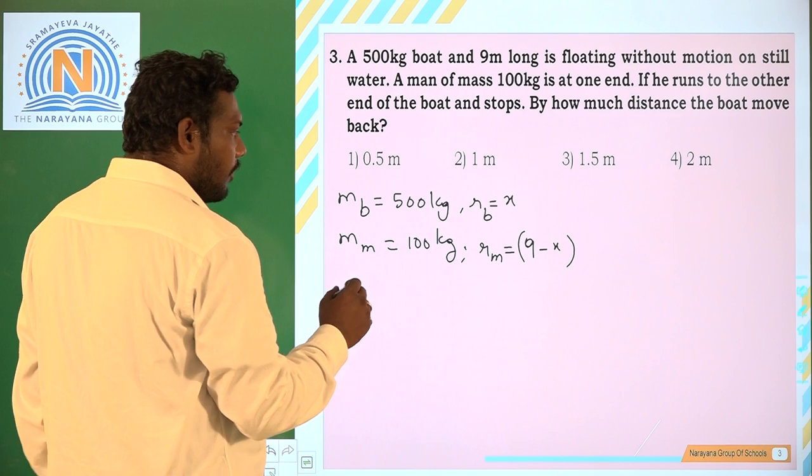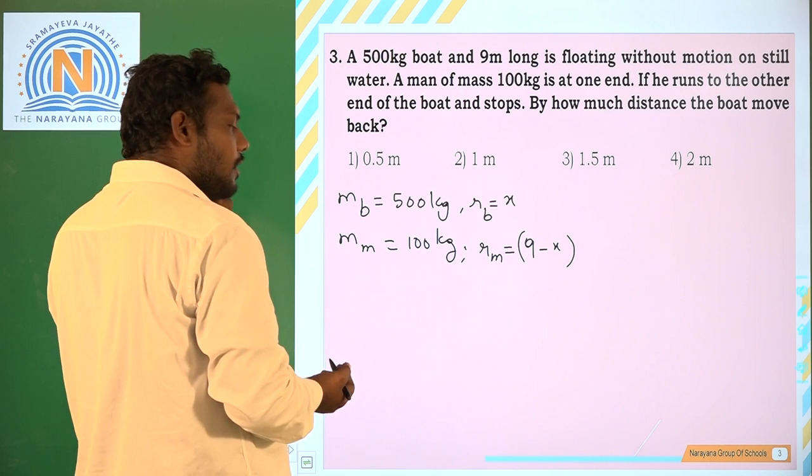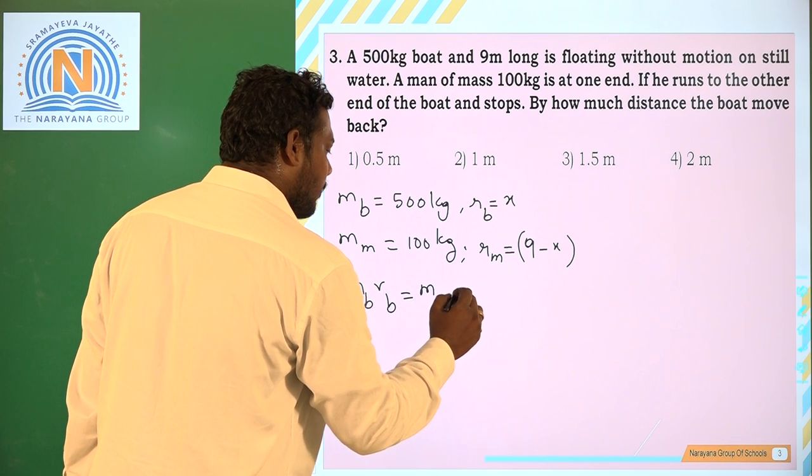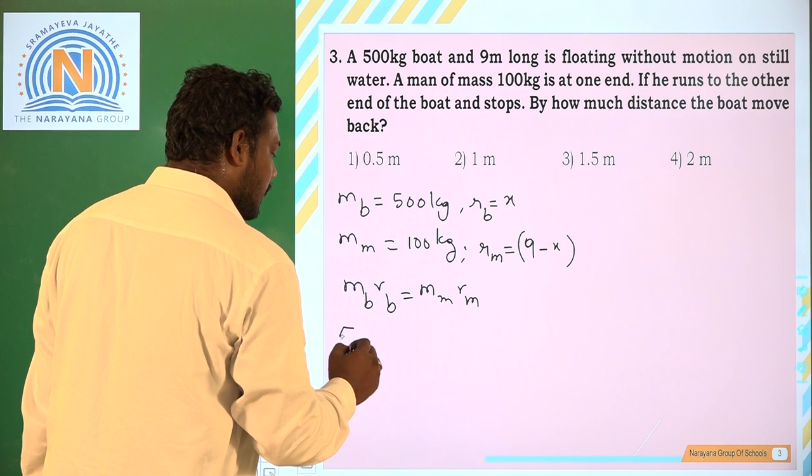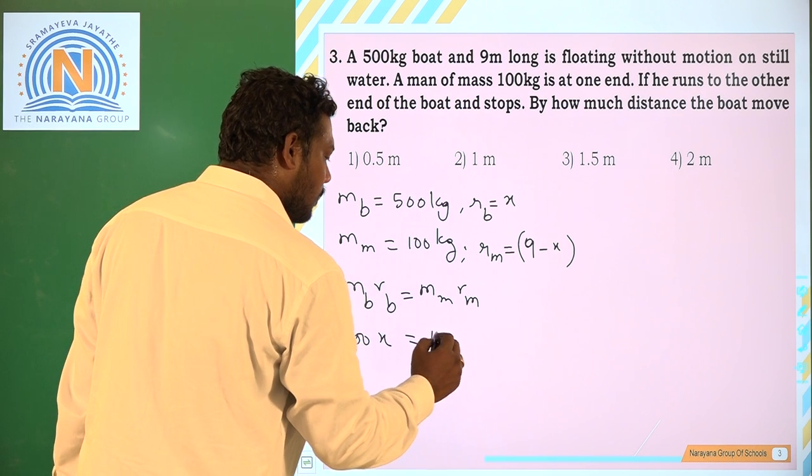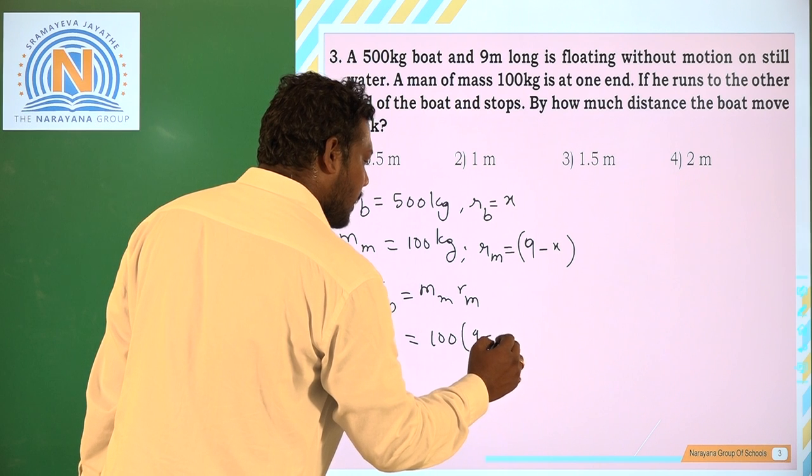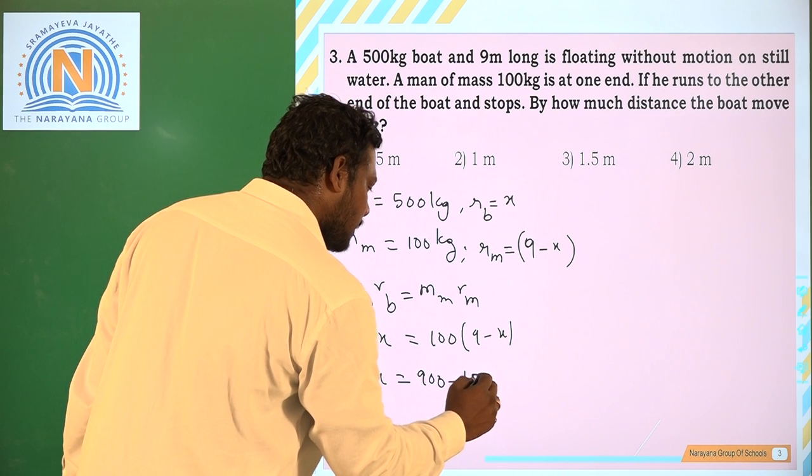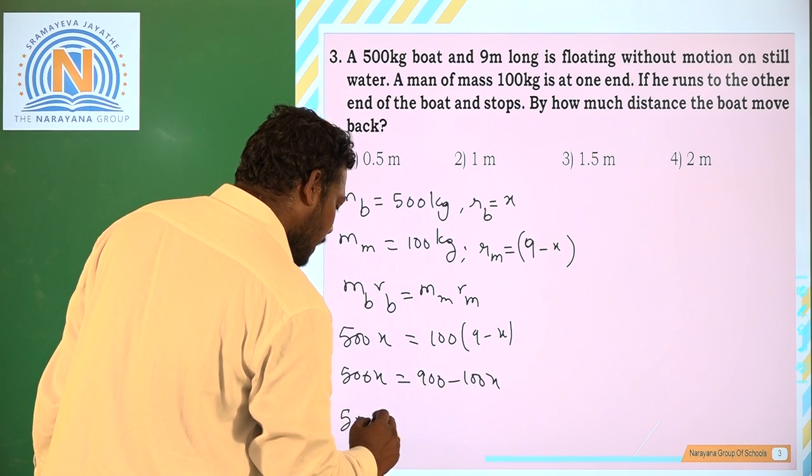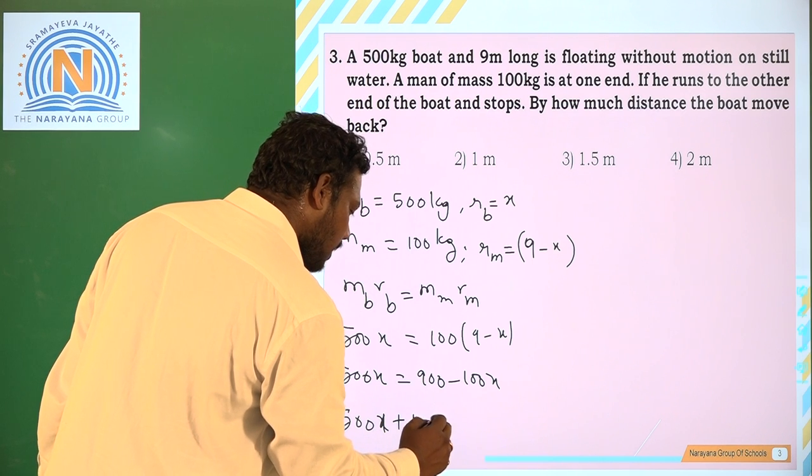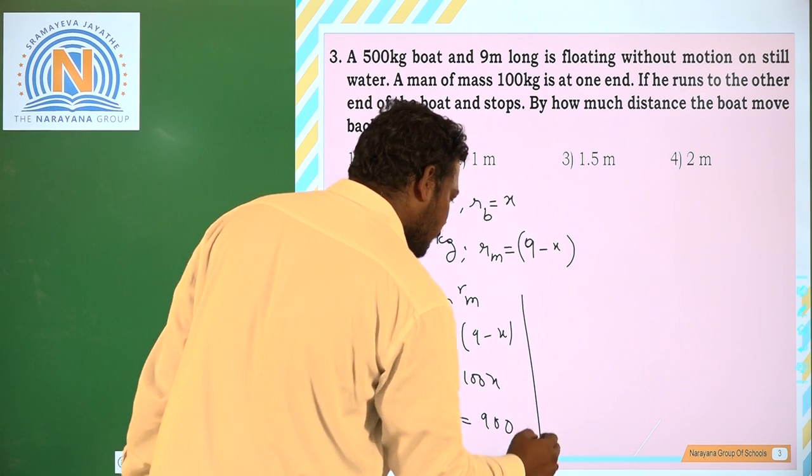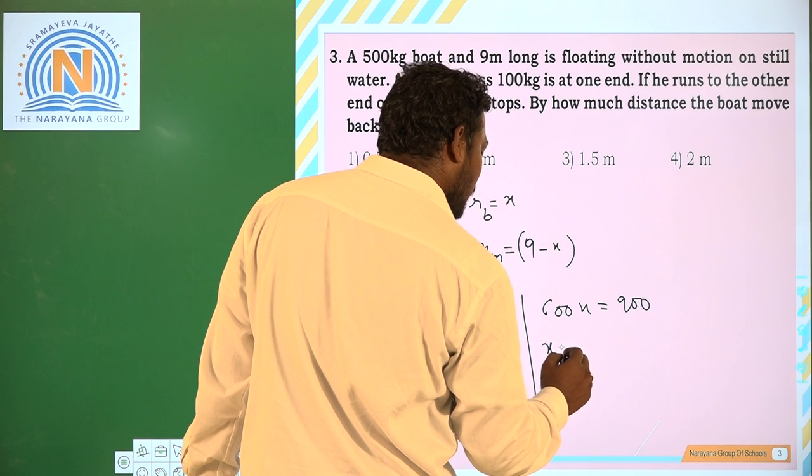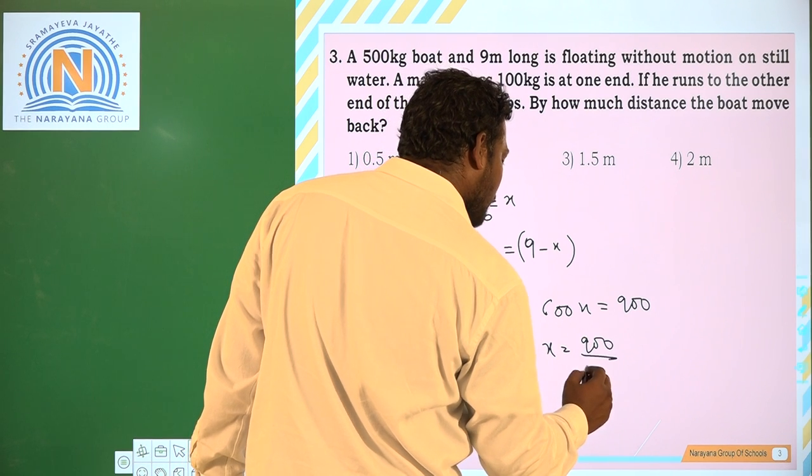So here, if the center of mass is stable, then Mb·Rb should equal Mm·Rm. That is 500x = 100(9 - x). 500x = 900 - 100x. Now 500x + 100x = 900. Now 600x = 900, x = 900/600.